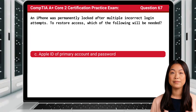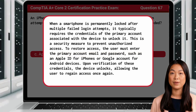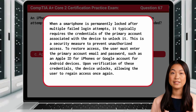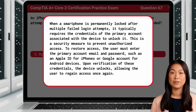The answer is C — Apple ID of Primary Account and Password. When a smartphone is permanently locked after multiple failed login attempts, it typically requires the credentials of the primary account associated with the device to unlock it. This is a security measure to prevent unauthorized access. To restore access, the user must enter the primary account email and password, such as an Apple ID for iPhones or a Google account for Android devices. Upon verification of these credentials, the device unlocks, allowing the user to regain access once again.